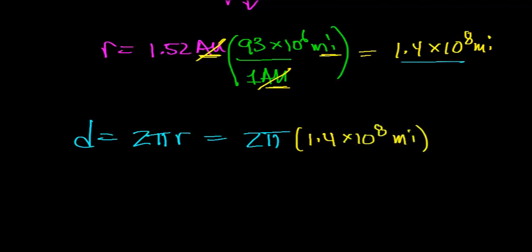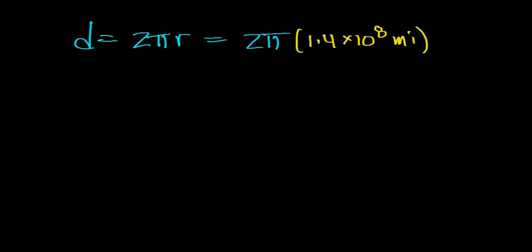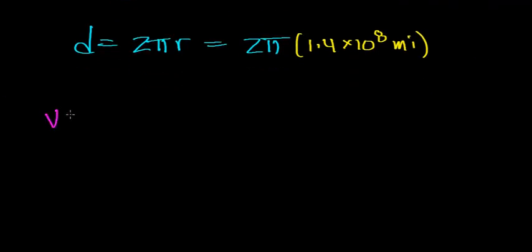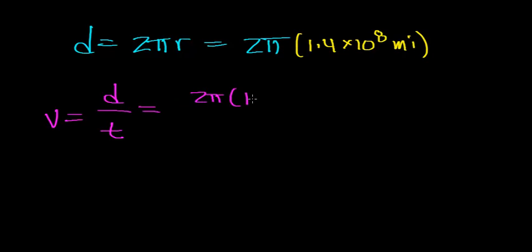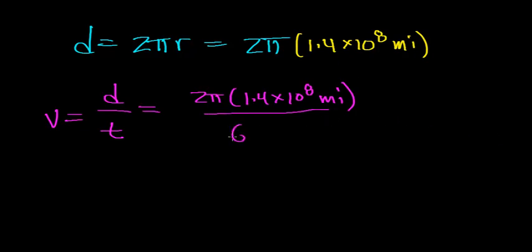Another assumption we'll make is that Mars revolves at constant velocity, so we can use the relationship: velocity equals distance divided by time. In this case, Mars travels 2π × 1.4 × 10⁸ miles in one revolution. Looking up in a data table, the time for Mars to complete one revolution around the Sun is 687 Earth days.